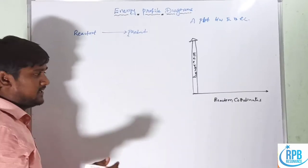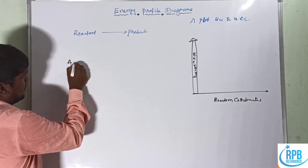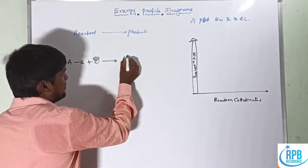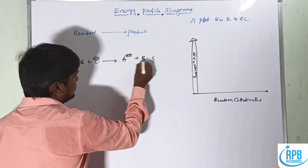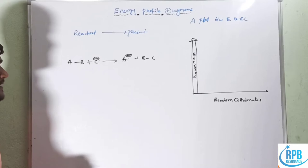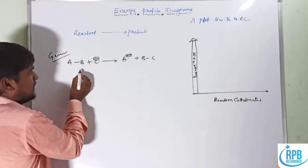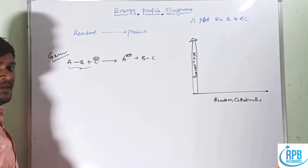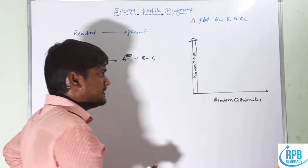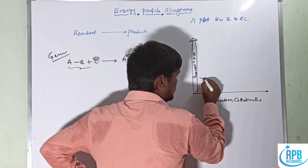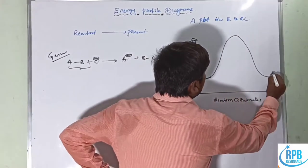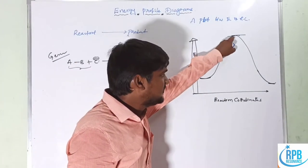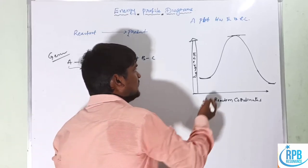Let us take a simple general reaction: A–B treated with C⁻ (a nucleophile) forms A⁻ plus B–C. The reactant A–B itself has some energy, and it reaches a maximum energy level, then instantaneously converts into products. This maximum energy barrier is the transition state.